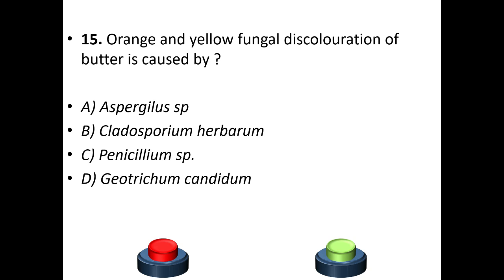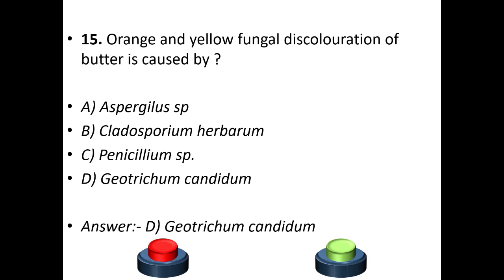Fifteenth question: orange and yellow fungal discoloration of butter is caused by A: Aspergillus species. B: Cladosporium herbarum. C: Penicillium species. D: Geotrichum candidum. The answer is D — Geotrichum candidum.